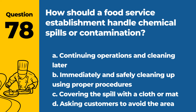Question 78. How should a food service establishment handle chemical spills or contamination? a. Continuing operations and cleaning later. b. Immediately and safely cleaning up using proper procedures. c. Covering the spill with a cloth or mat. d. Asking customers to avoid the area. Answer: b. Immediately and safely cleaning up using proper procedures. Quick and safe response is essential for safety.